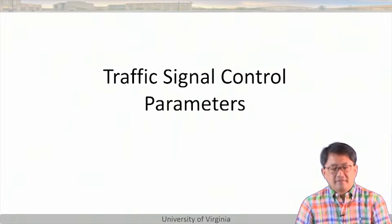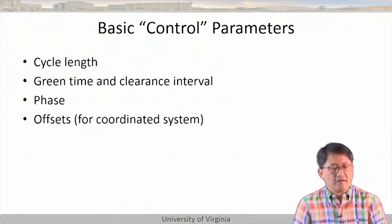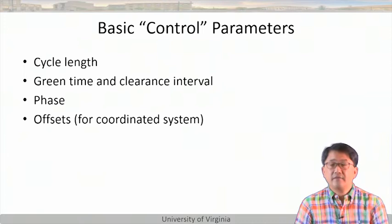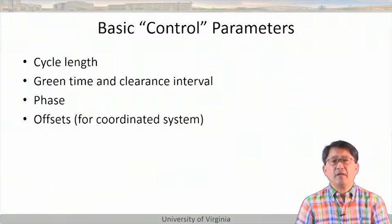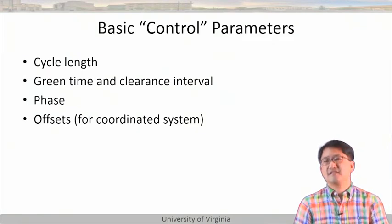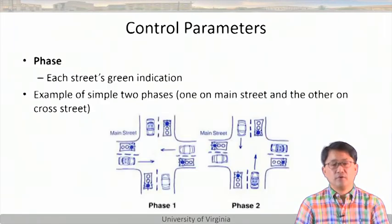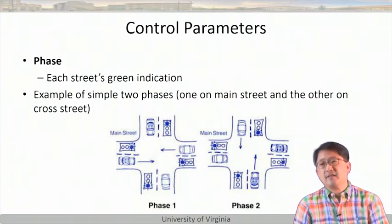Signal control parameters include cycle length, green time, clearance interval, phase sequence, and offsets for coordinated systems. A phase is a basic indication of concurrent green indications. When you have two phases, the main street green is on first, then the cross street green is on — fairly straightforward.